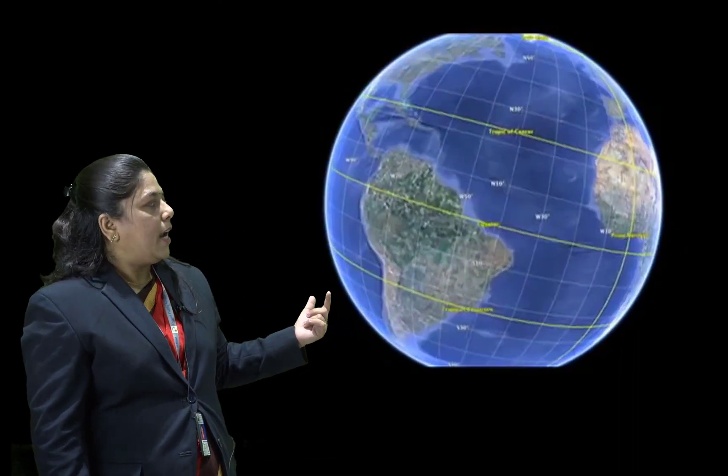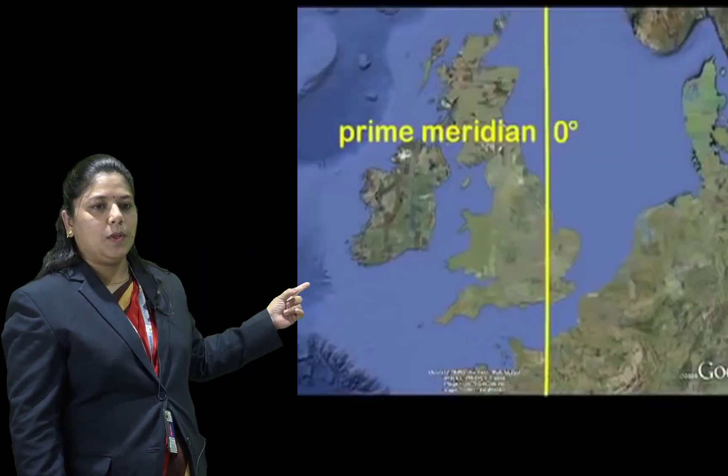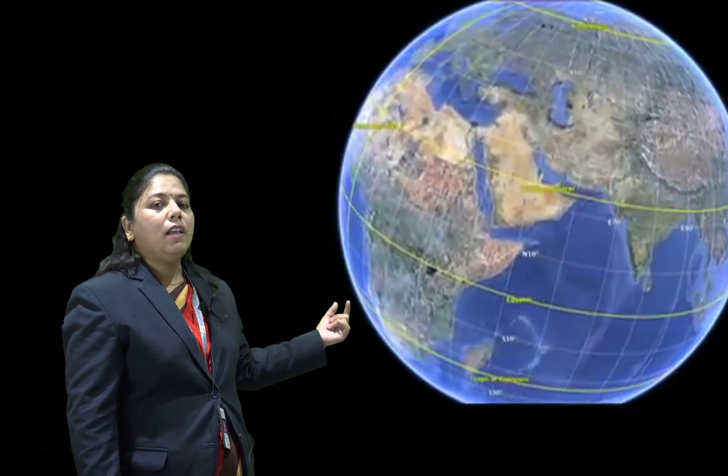This shows longitude and latitude. This is the international date line. Do you see the prime meridian? It goes through the UK. That is why this is called the prime meridian. Each and every place around the world, in different countries, has different days and different dates.